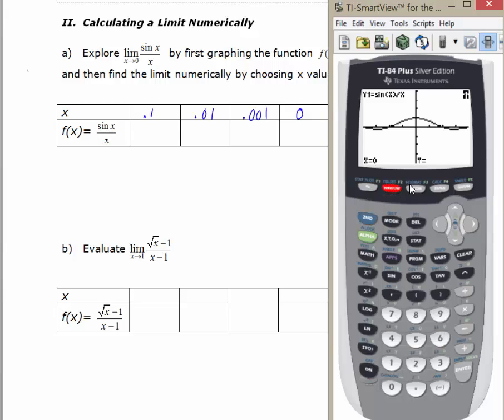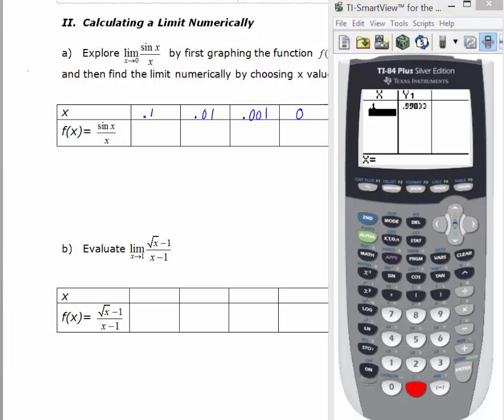We'll go to 2nd window to set up my table. It's on Ask and Auto, which I want it to be. We'll go to 2nd graph. There are some values there from a problem from before, so I'm going to delete those. I'm going to start by approaching from the right. I've got 0.1, 0.01, 0.001. And it looks like we're approaching 1, and I'm going to arrow and highlight over that, so you can see that we're at 0.99999. So let's just write down five decimal places for each of these.